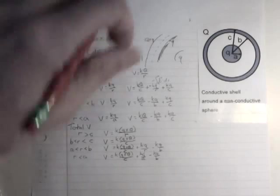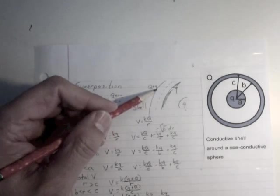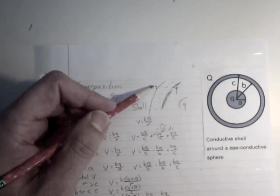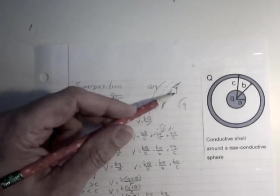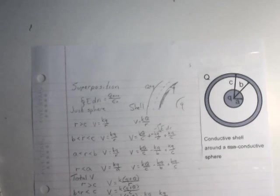And so you can do this with superposition, but you absolutely have to make sure you pay attention to the fact that the conductive shell is going to have a redistribution of charges. When you consider the potential only due to the shell, you have to assume that the shell has that distribution of charges.